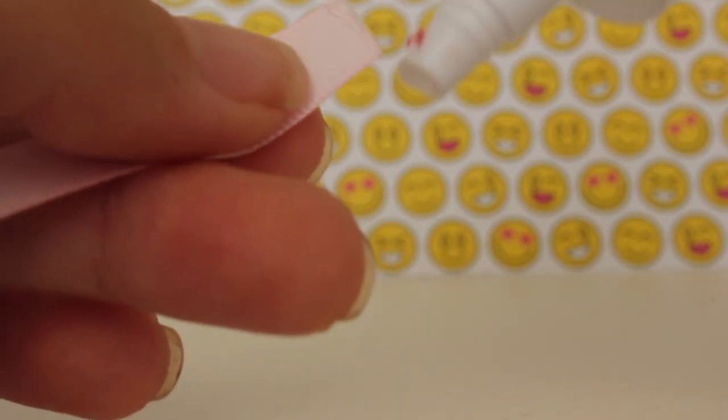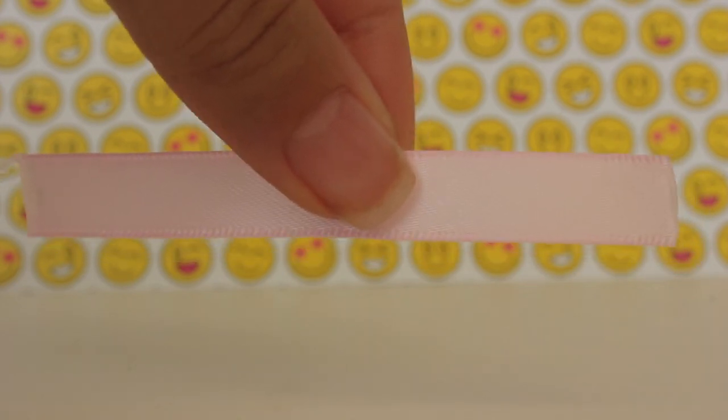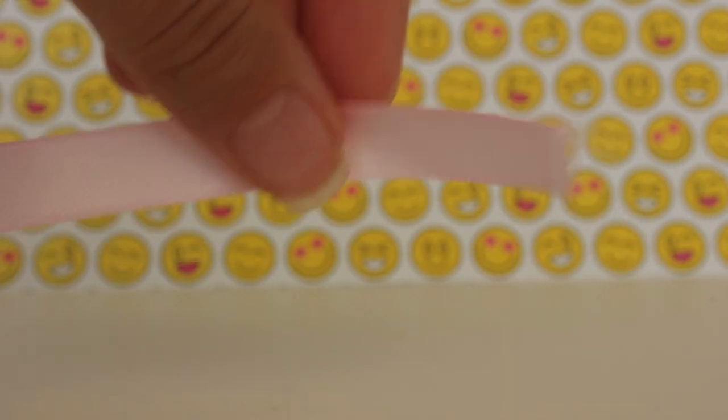After putting your fabric fusion or glue, just let it sit and dry for a little while that way it doesn't get all messed up.